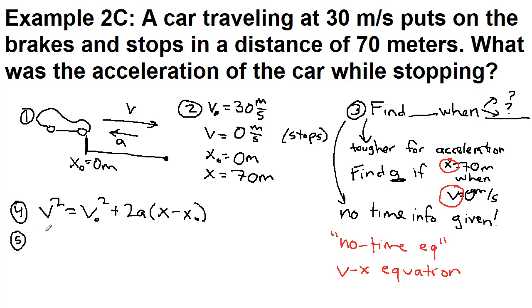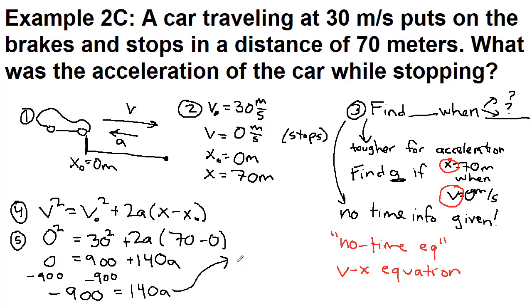So we have 0 squared equals 30 squared plus 2 times our unknown acceleration times 70 minus 0. So we have 0 equals 900 plus 140 times a. So we can subtract 900 from both sides so that we have negative 900 equals 140 a. And so we divide both sides by 140, so negative 900 over 140. And our acceleration is negative 6.43 meters per second squared.